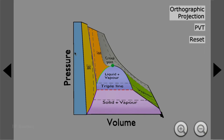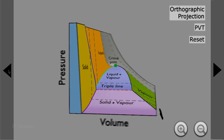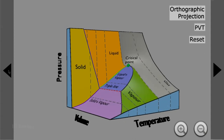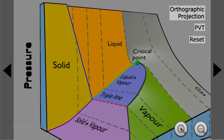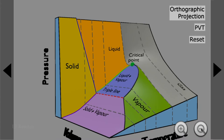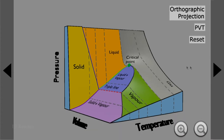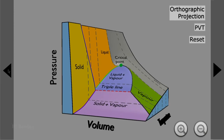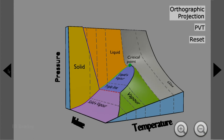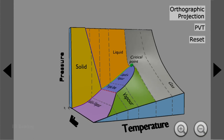We can see here pressure and volume in this direction, and I can rotate this phase diagram like this. I can also zoom in and zoom out so that we can understand more about the diagram itself, whether we want to see something from close or from a distance. We have the facility of rotating in both directions. What you see from here is we have three axes: vertical pressure, volume, and temperature.